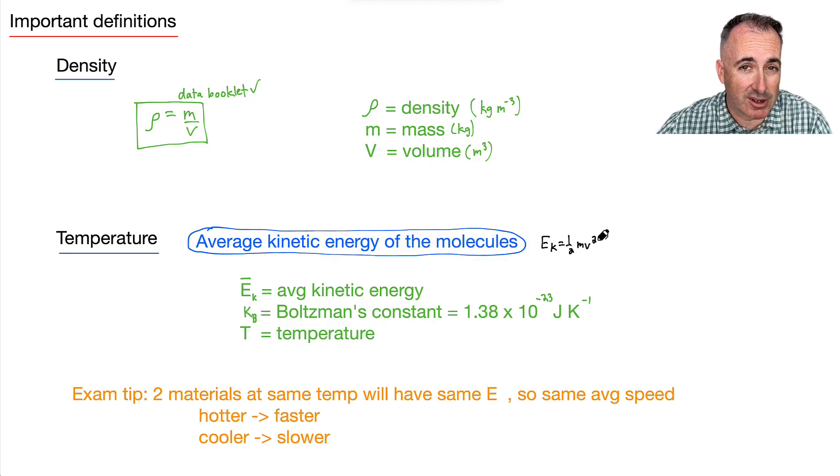So that means, if we go back down here, that means hotter equals faster. Cooler equals slower. That's because two materials at the same temperature will have the same kinetic energy, so they'll have the same average speed.